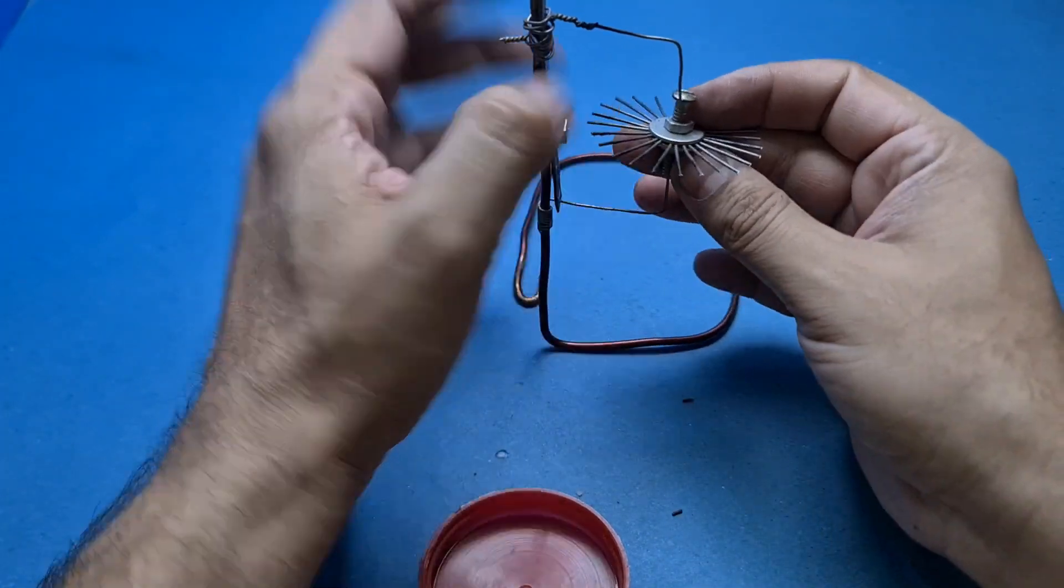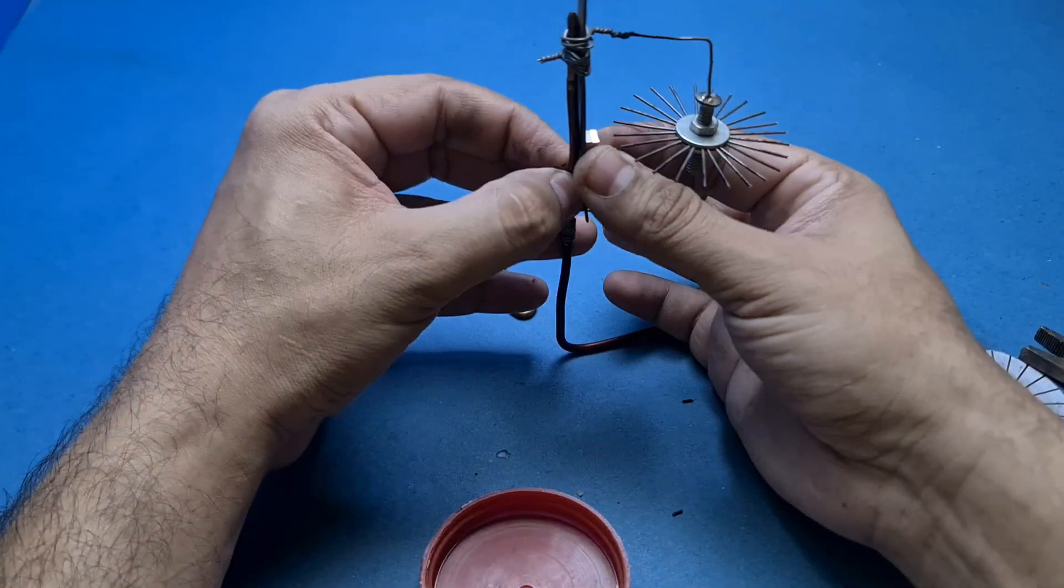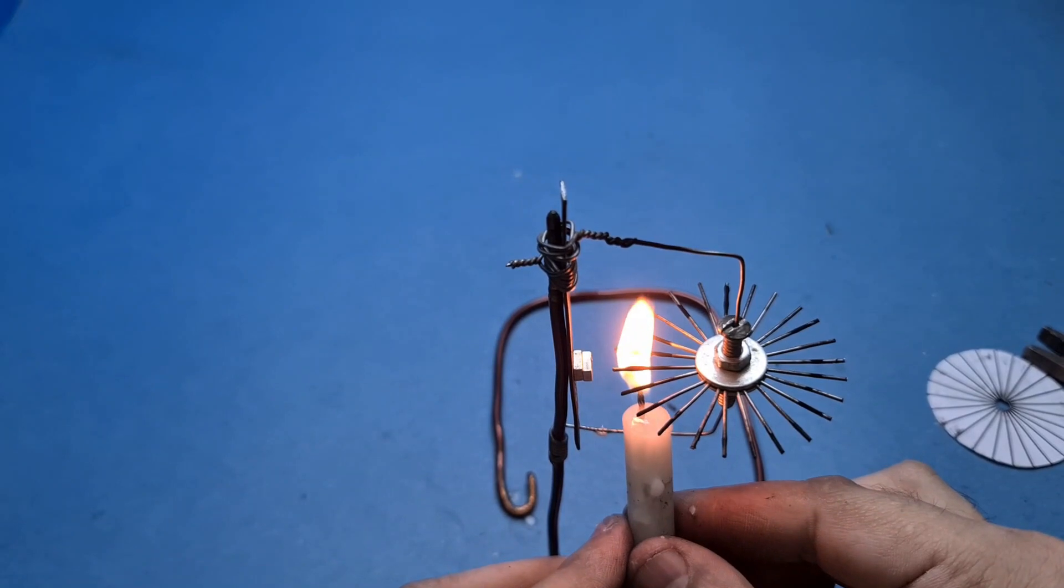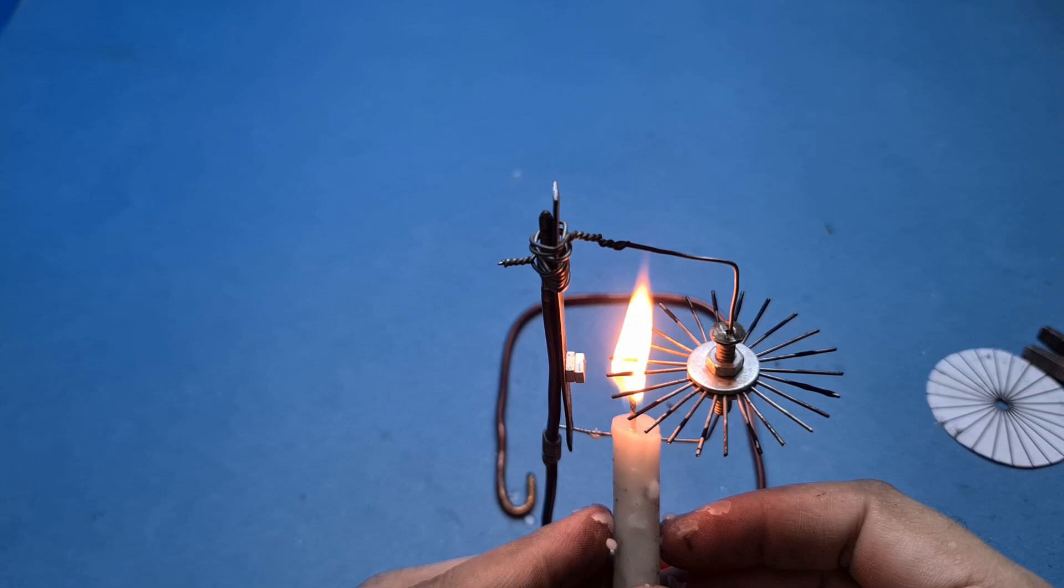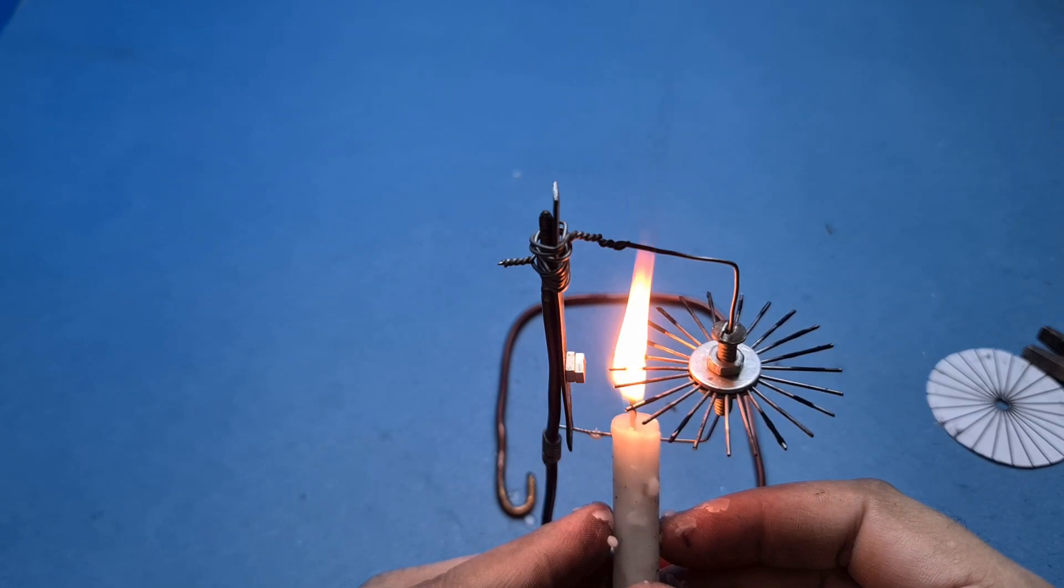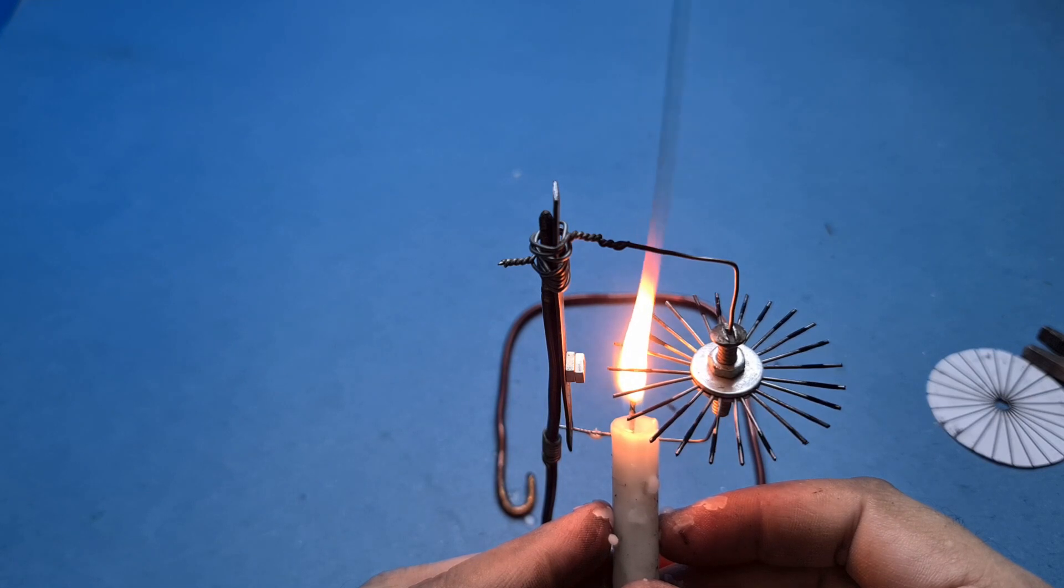Okay, now let's place the wheel near the magnet and test our engine. By the way, the flame of the candle should be focused on the pin that is right in front of the magnet and the pin next to it. The candle flame should never touch the magnet, otherwise it will permanently lose its magnetic properties.